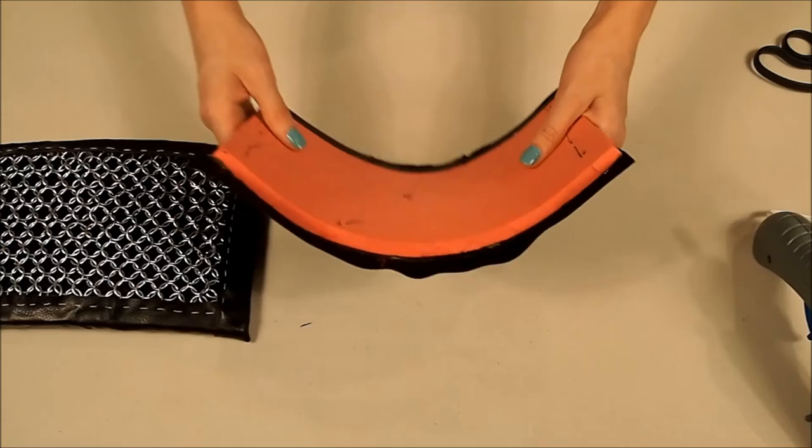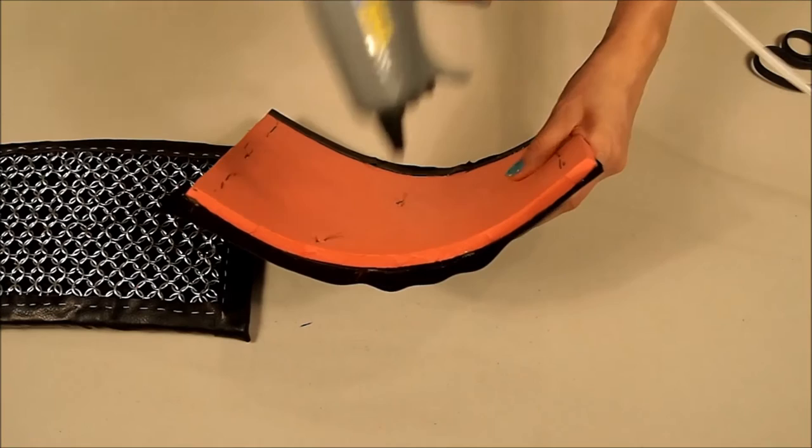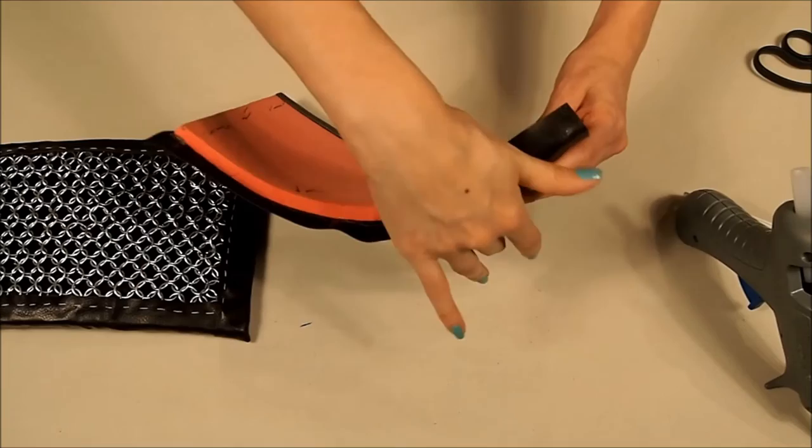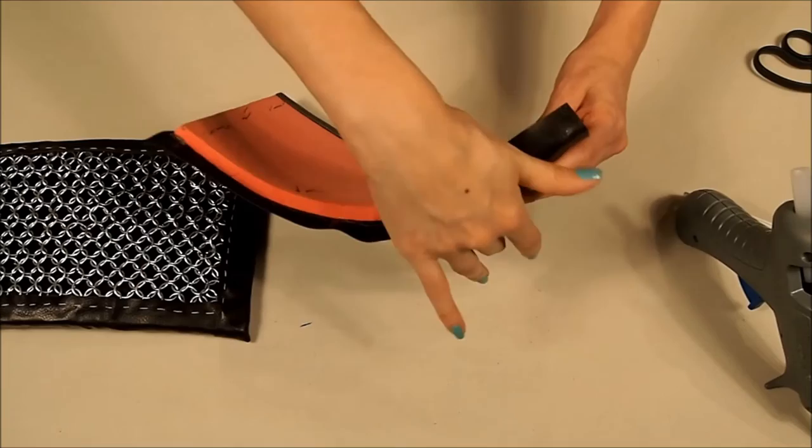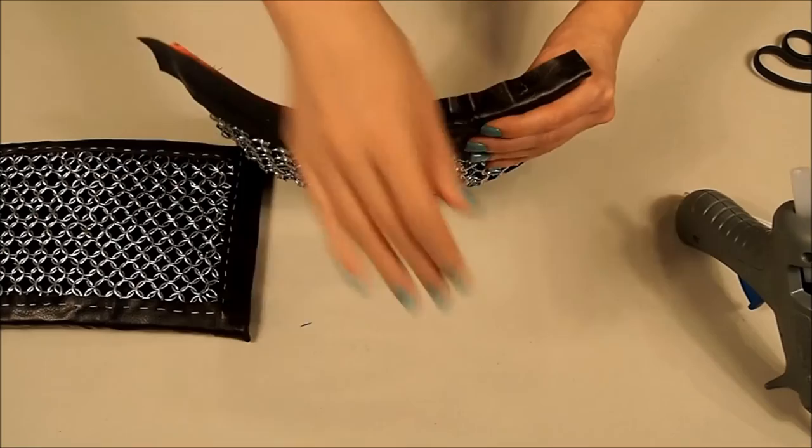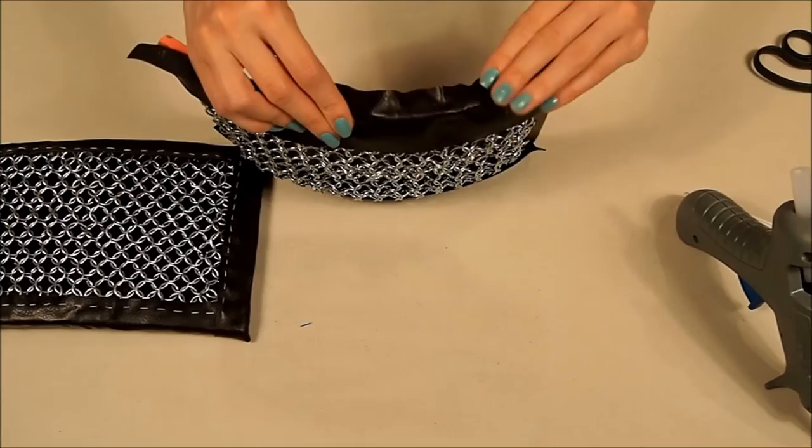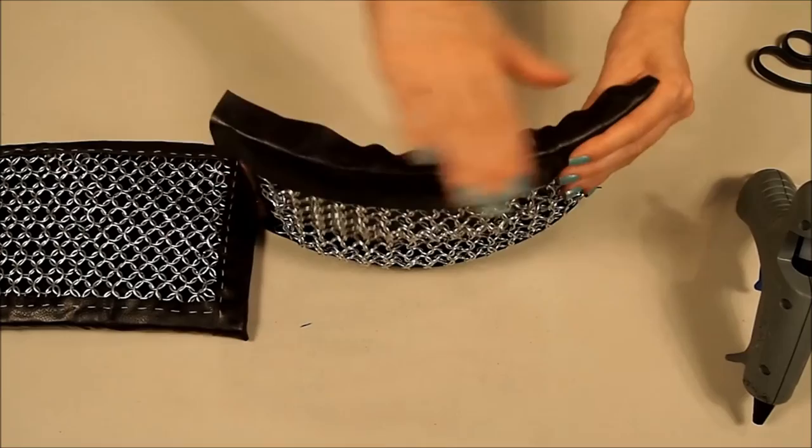Now we're going to start gluing the edge here. You're going to follow the same steps. If you've worked with hot glue before, you know that it's important to try to glue it down as soon as you can. Because if not, the glue starts drying up and then it's a pain to try to either rip it off and do it again or it's going to come out looking bulky. You want to press it down as soon as you can.